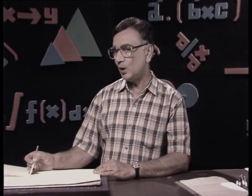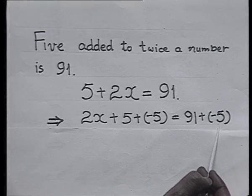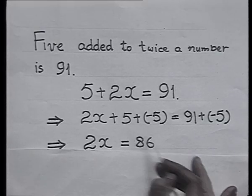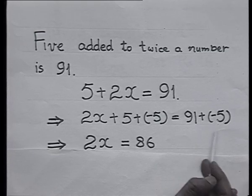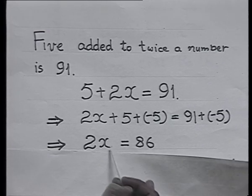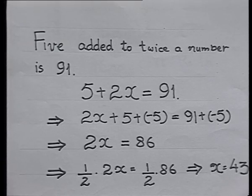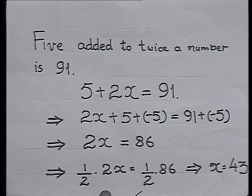Negative 5 has been added onto both sides of the equation. Since 5 and negative 5 are additive inverses of each other, their sum is 0, and 91 plus negative 5 gives me 86. So 2x becomes equal to 86, and from here I can get the value of x by dividing both sides by 2, or multiplying by 1/2.